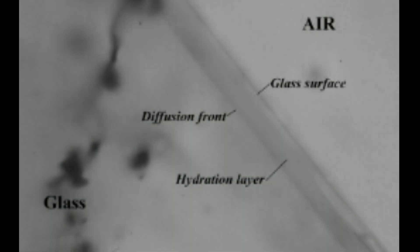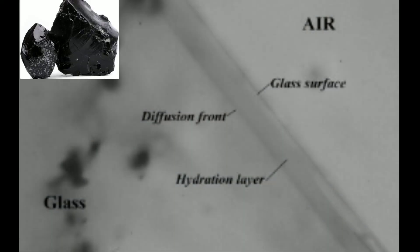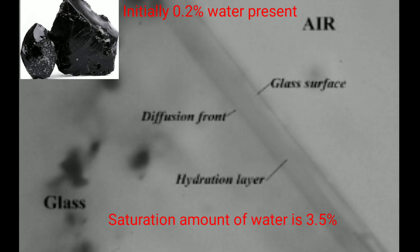When an unworked nodule of obsidian is initially fractured, there is 0.2% water present. Over time, water slowly diffuses into the artifact, forming a narrow band, rim, or rind that can be seen and measured with many different techniques. The hydration process continues until the fresh obsidian surface contains about 3.5% water — this is the saturation point.